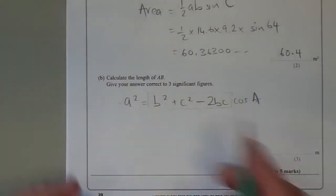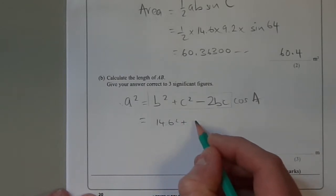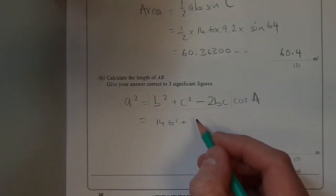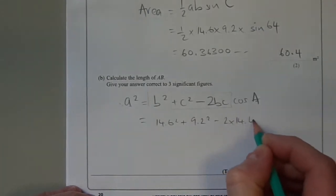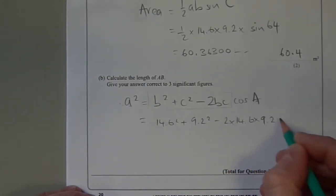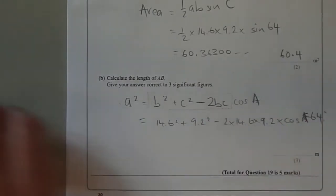Plug in those numbers into the formula: 14.6 squared plus 9.2 squared minus 2 times 14.6 times 9.2 times cosine of 64 degrees.